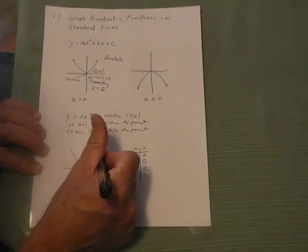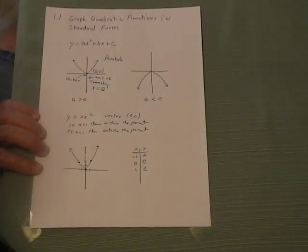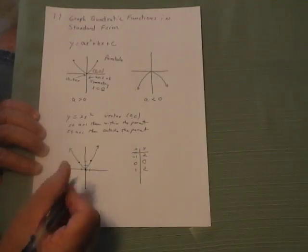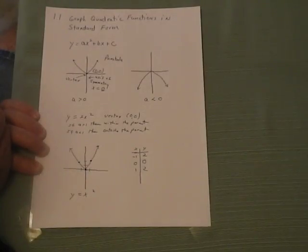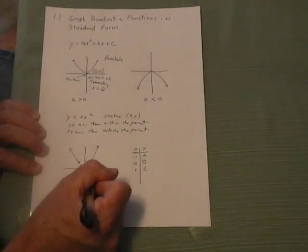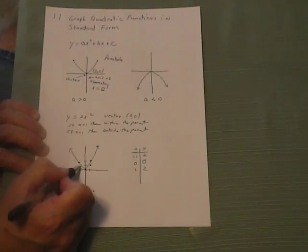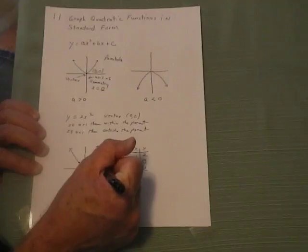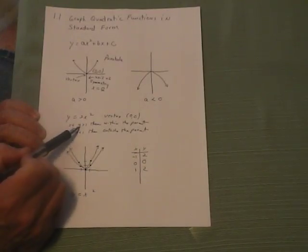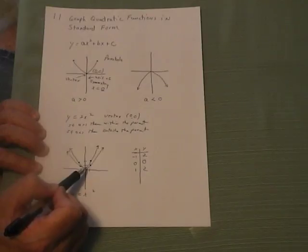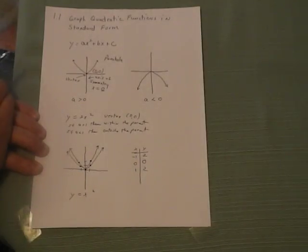Drawing a smooth curve through those points gives us the parabola for y equals 2x squared. For the parent y equals x squared, the vertex is still at (0, 0), but going over 1 only goes up 1, since 1 squared equals 1. So the parent parabola is outside of the y equals 2x squared parabola, confirming that when a is greater than 1, the parabola is on the inside of the parent.